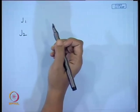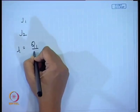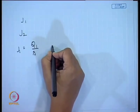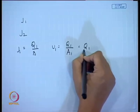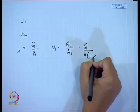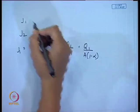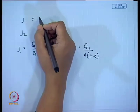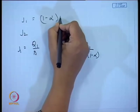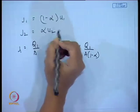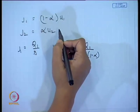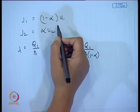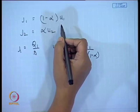From the definition we know that j₁ = q₁/A and u₁ = q₁/A₁ = q₁/(A·(1−alpha)). Therefore j₁ = (1−alpha)·u₁, and j₂ = alpha·u₂. This is the relationship between the volumetric flux and the local component concentration and the local component velocities.